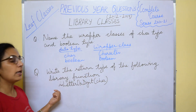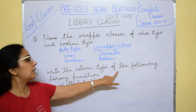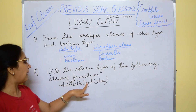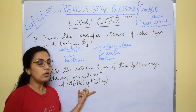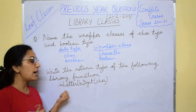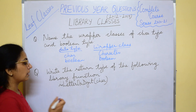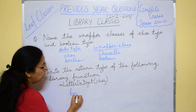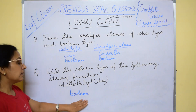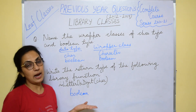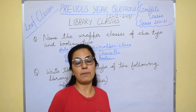Now the question for year 2016: write the return type of the following library function — isLetterOrDigit(char). As I just told you, if any function has 'is' in it, without thinking further, the return type is boolean. Simple one-word answer and you will get full marks in these types of questions.